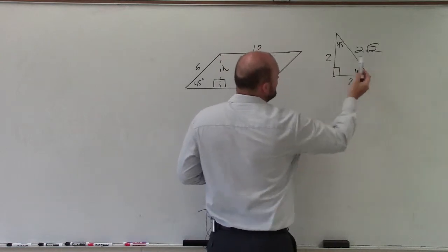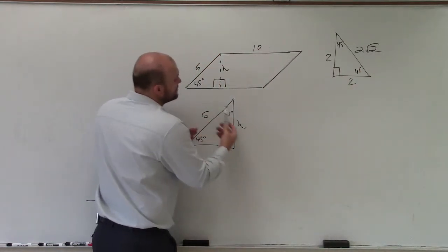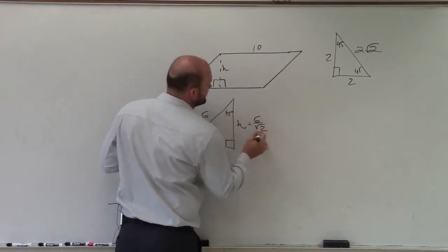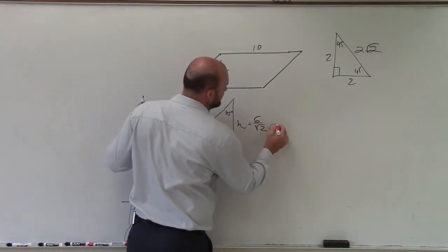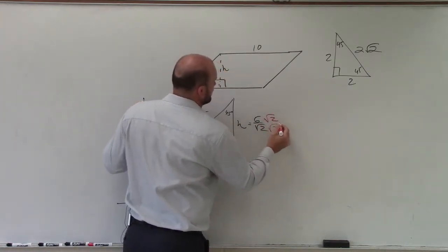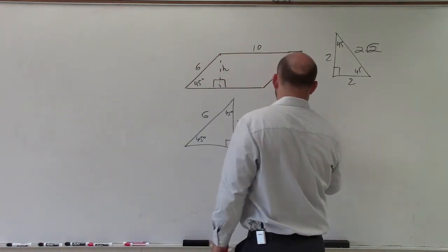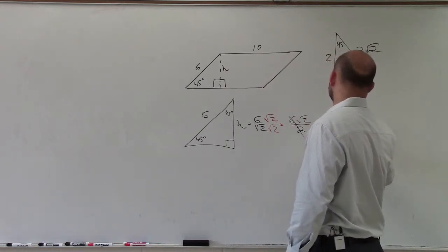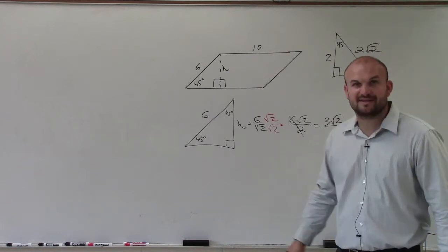To go from leg to hypotenuse, you multiply by the square root of 2. So to go from the hypotenuse to the leg, you're going to have to divide by the square root of 2. We don't want to write a radical in the denominator, so I'm going to rationalize the denominator. Therefore, my final answer will be 6 square root of 2 over square root of 2 times square root of 2 is 2. Those divide out, which is 3 square root of 2. You can just leave it like that.